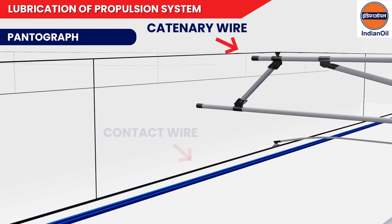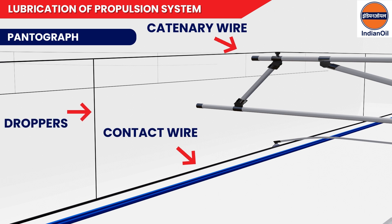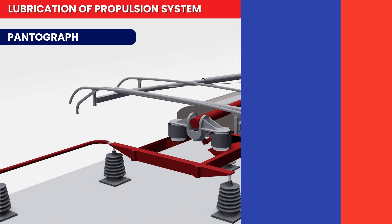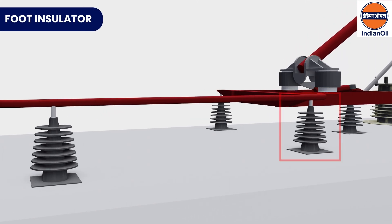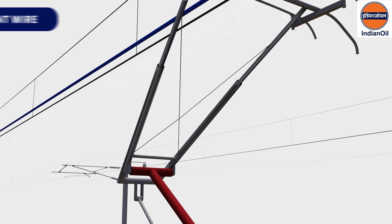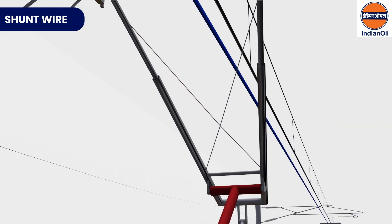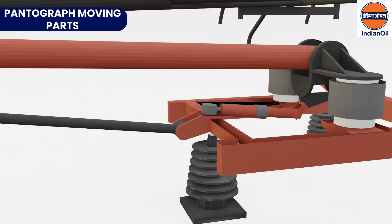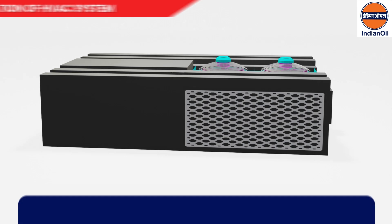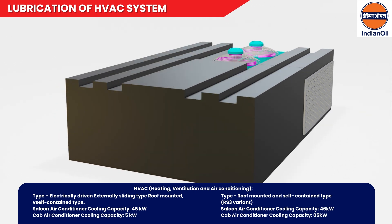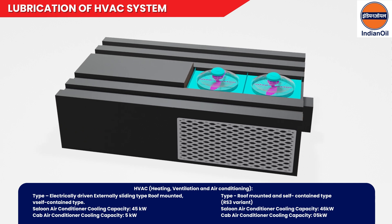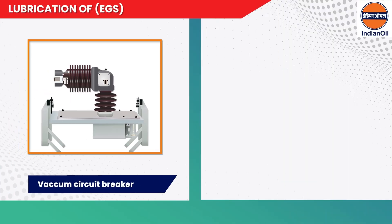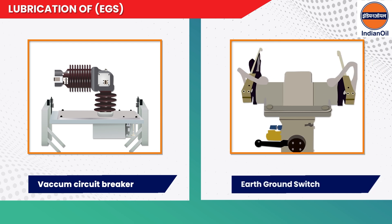Lubrication for the propulsion system is applied as: grease used on gear of master controller and for bearing of traction motor; a thin insulating coating on the foot insulator of the pantograph; conductive grease on shunt wire of pantograph, pantograph moving parts and bearings, and contactor HV contacts. For HVAC (heating, ventilation, and air conditioning): refrigeration oil is used for the HVAC compressor. Number four: earth ground switch — grease is applied for VCB (vacuum circuit breaker) and EGS moving contacts.